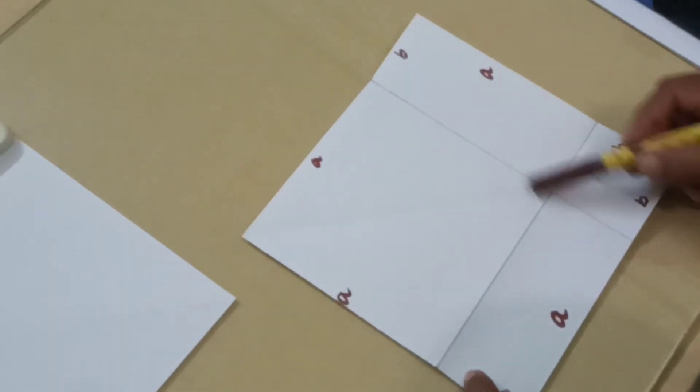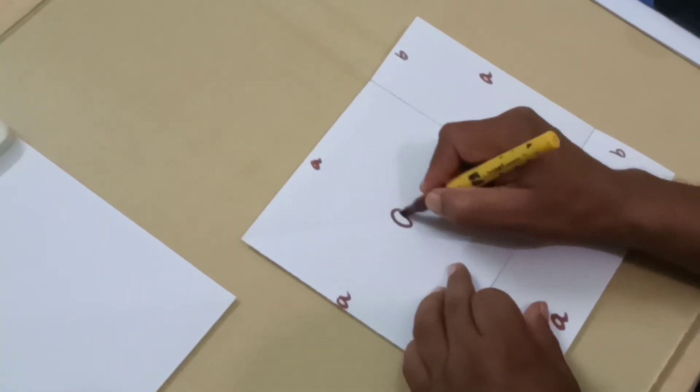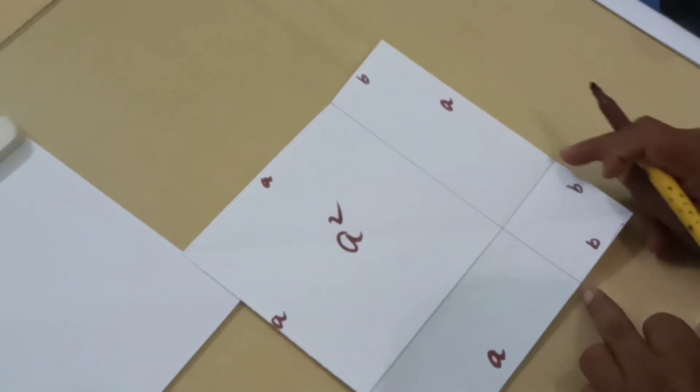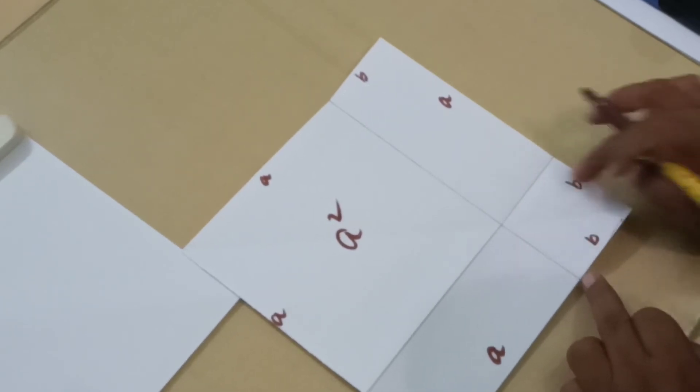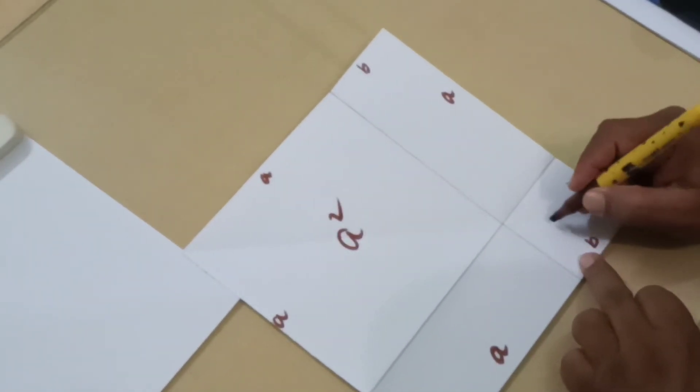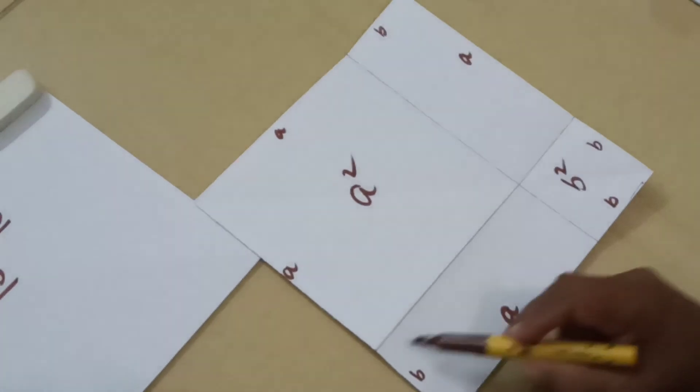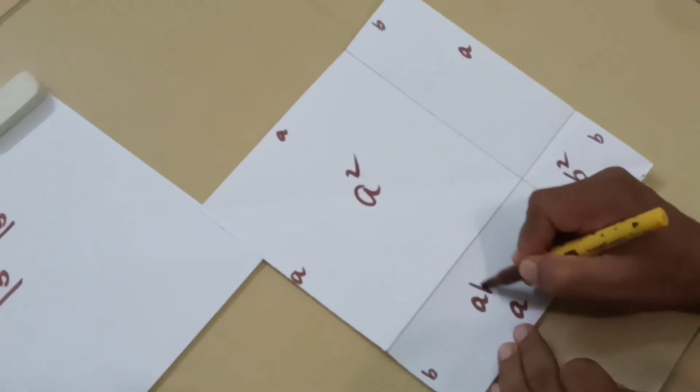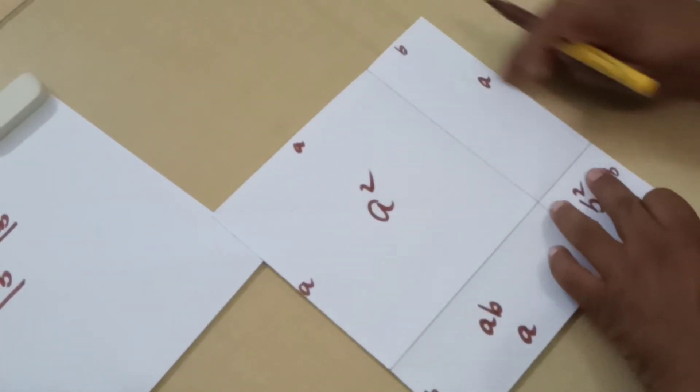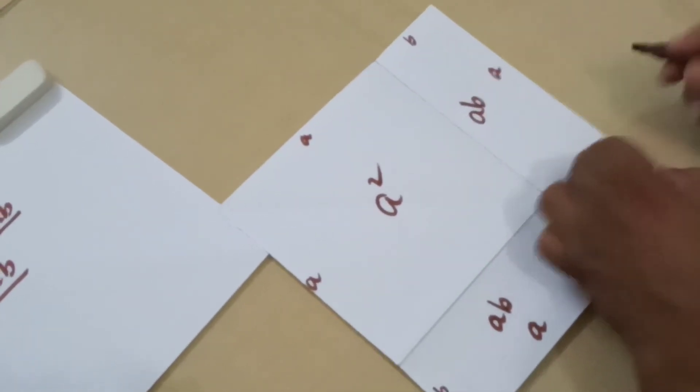This area which is a into a is a squared. Now let us look at this square. This is b and this is b. So the area of this small square will be b squared. And we have rectangles. One rectangle over here and another rectangle over here. So the area of this rectangle will be a into b, which is ab. And here also the area of this rectangle is a into b, which is ab.